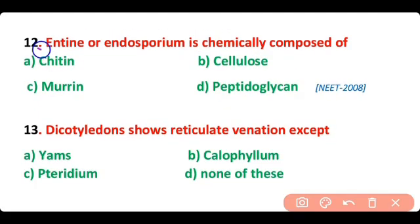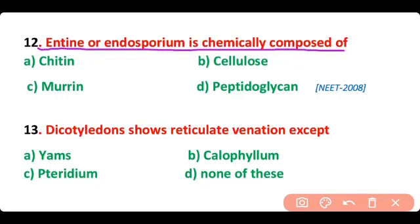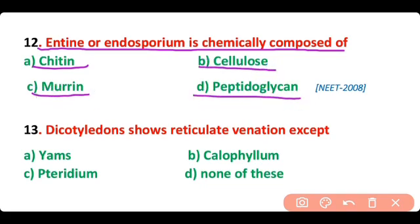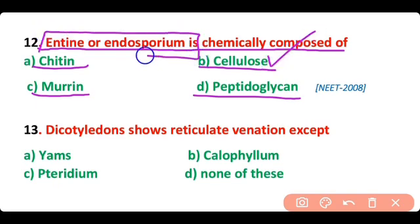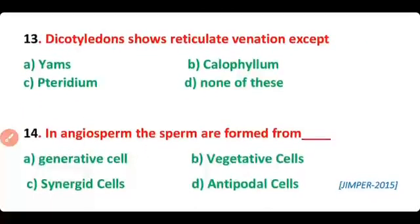Question 12. Intine or endosporium is chemically composed of: chitin, cellulose, murine, or peptidoglycan? The correct answer is option B. The intine or endosporium of angiosperms is chemically composed of cellulose.